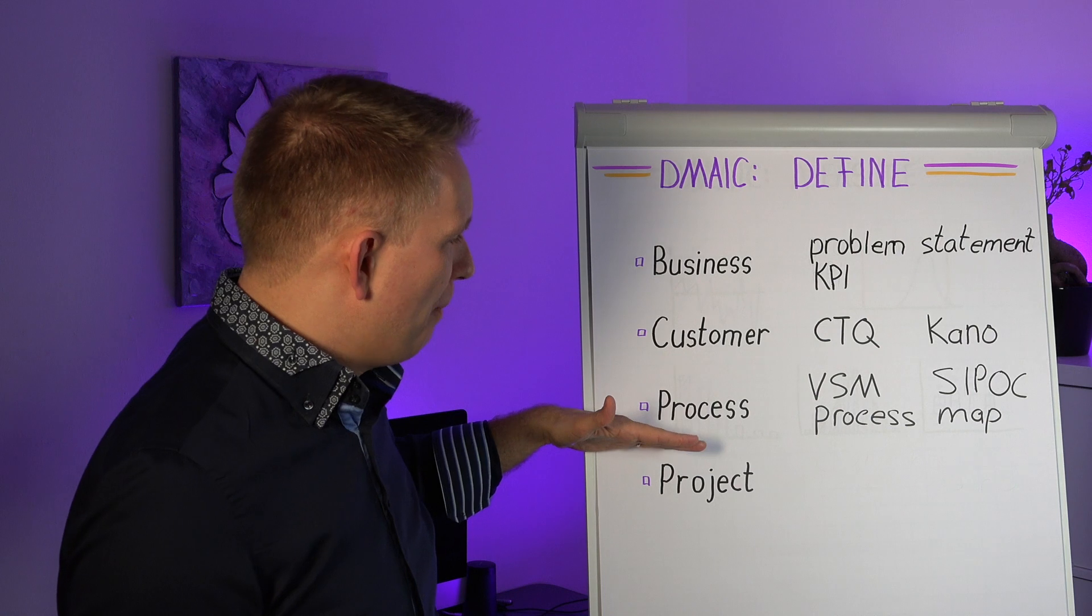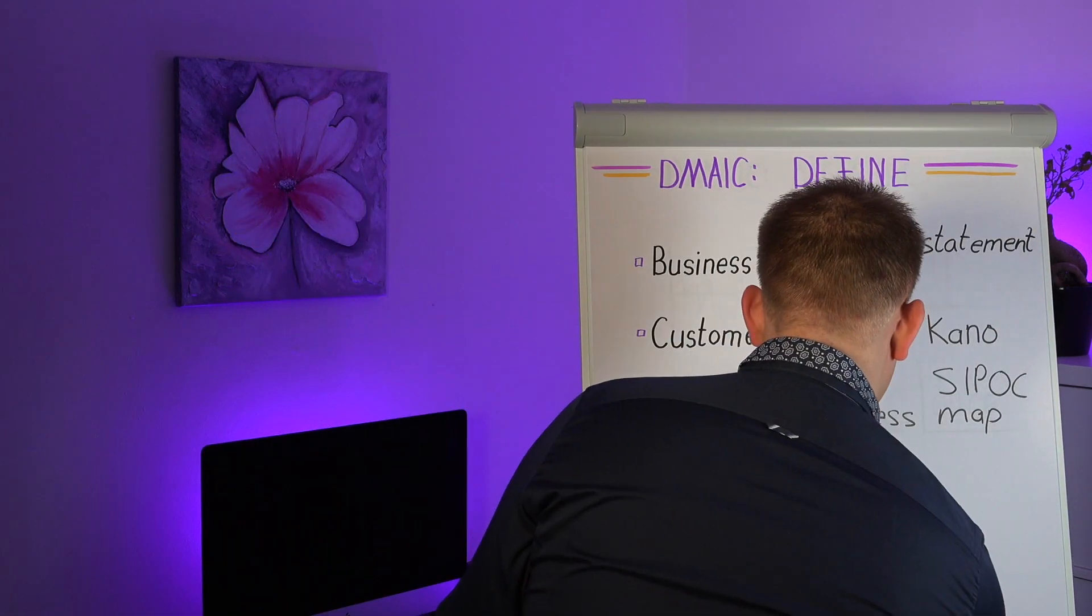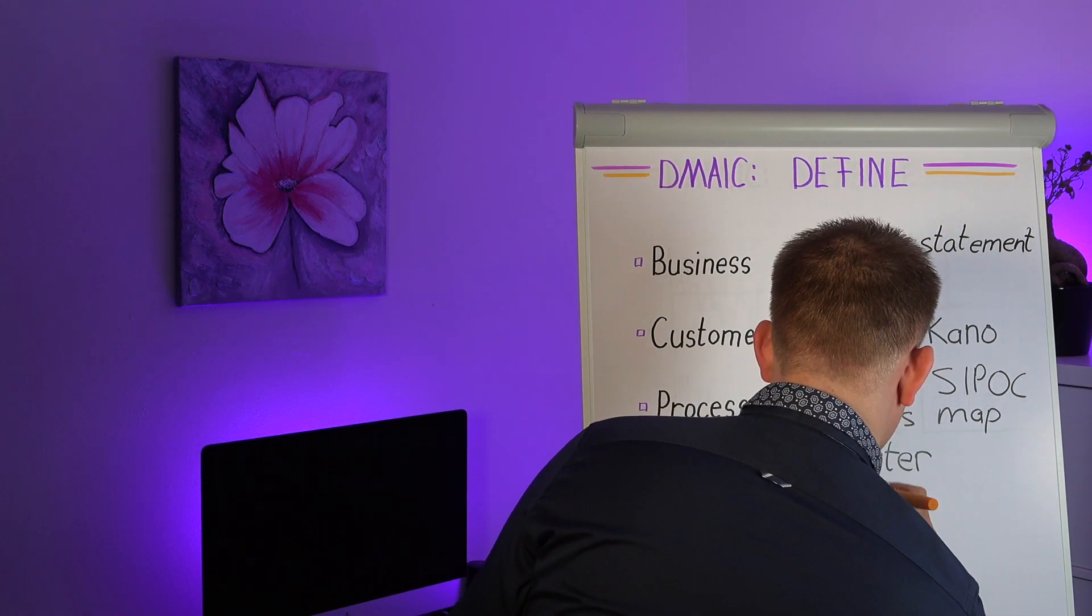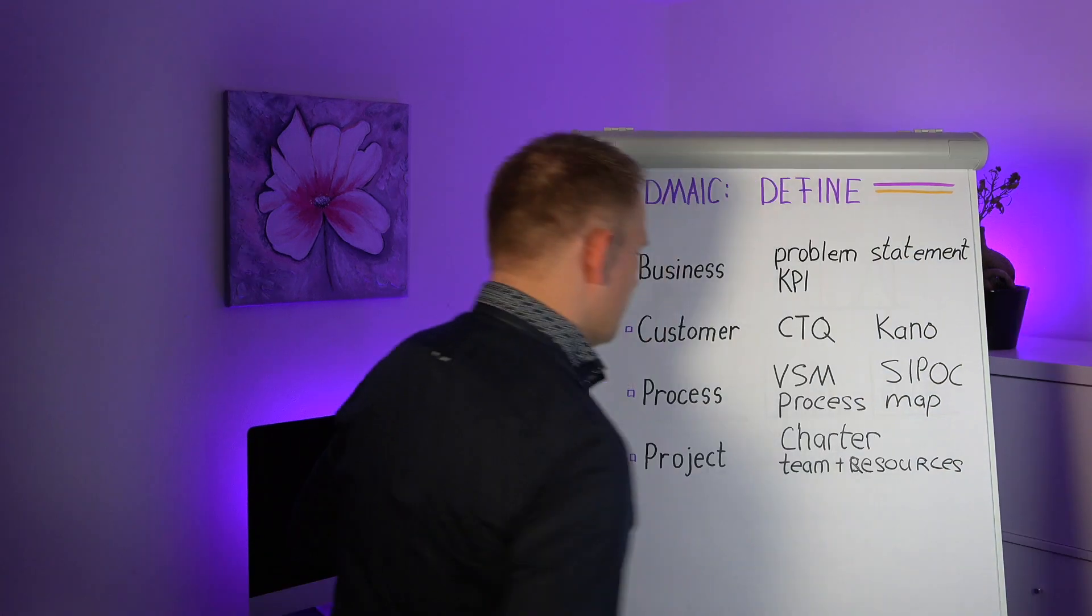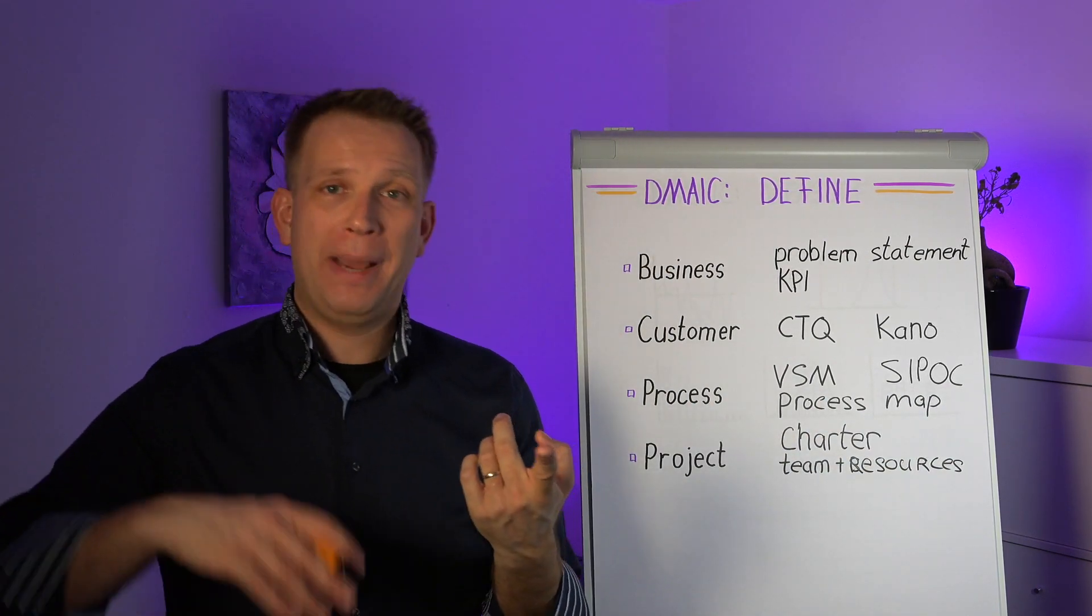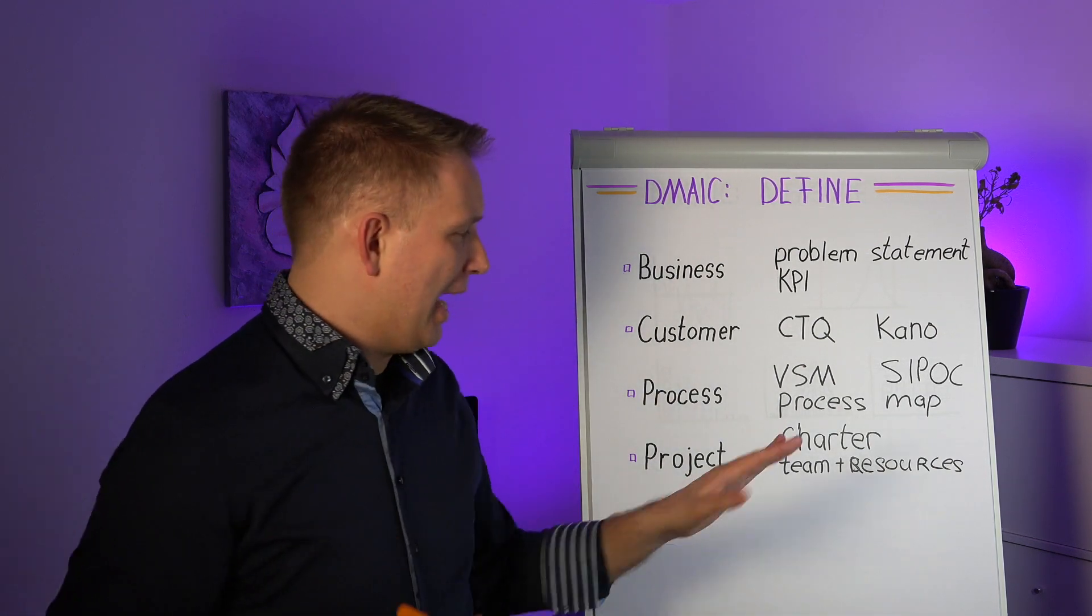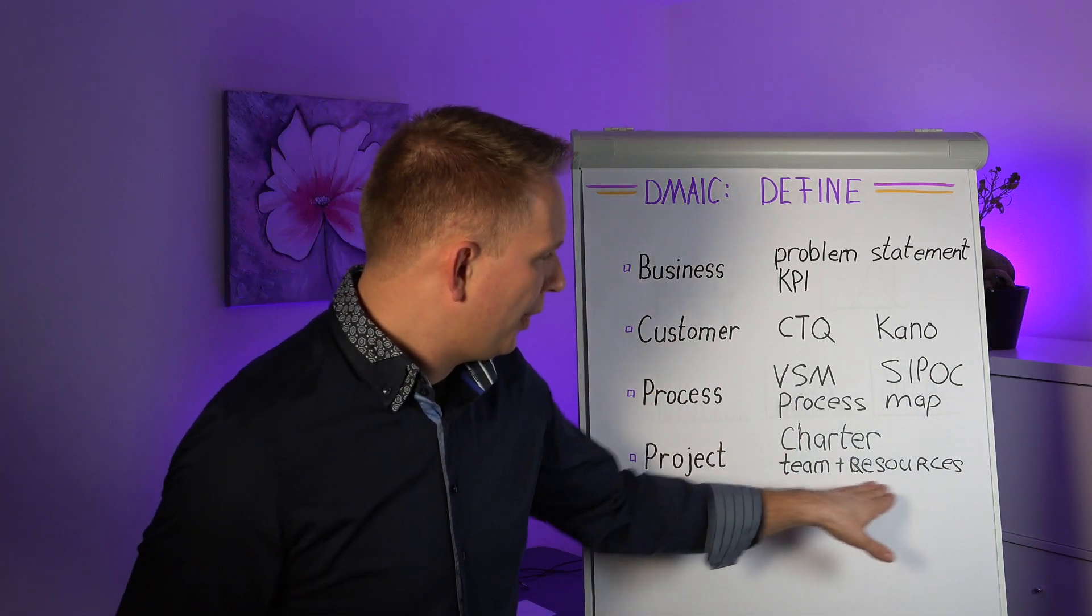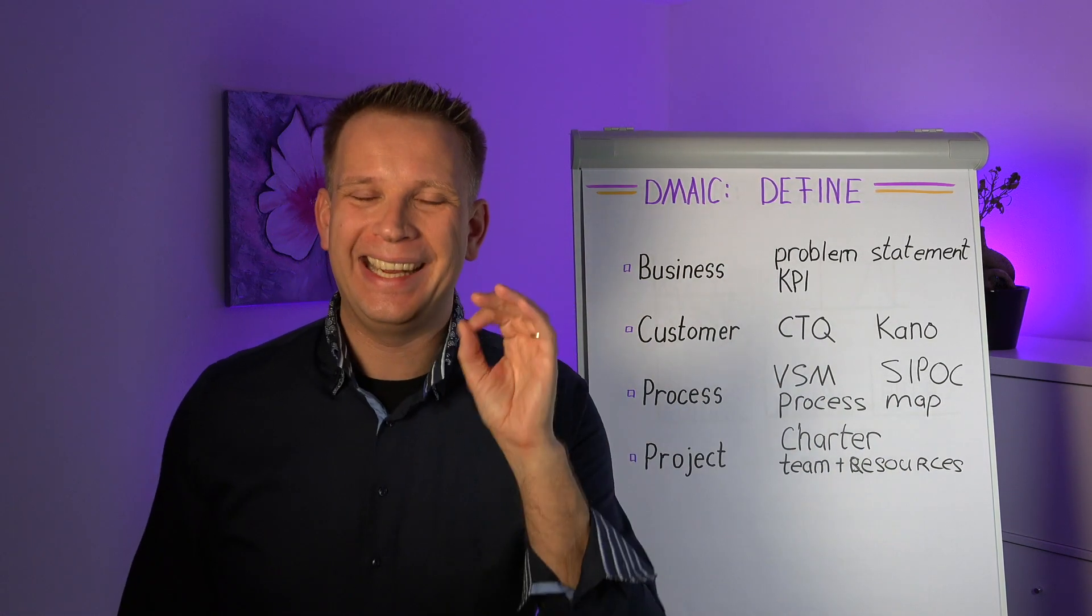And then of course, when we combine all of this, we get to your project goals and the project resources. So we get to the project charter that states what the project is about, how far we want to go in the KPI, who's in the team, what resources do we have, roughly a timeline, things like that, who the sponsor is. So put your team and your resources in that charter as well. Define it here.